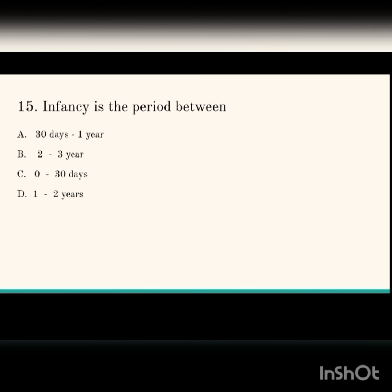Next question: infancy is the period between which ages? The options are 30 days to 1 year, 2 to 3 years, 0 to 30 days, and 1 to 2 years. Infancy means 30 days to 1 year. The period from 0 to 28 days is known as the neonatal period.